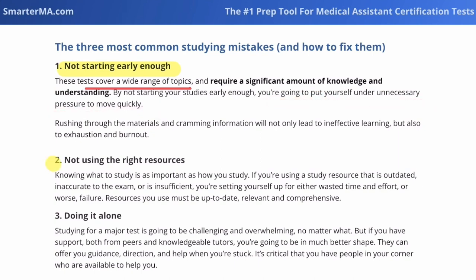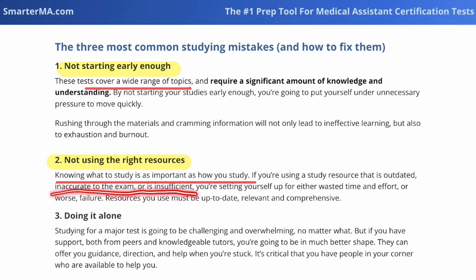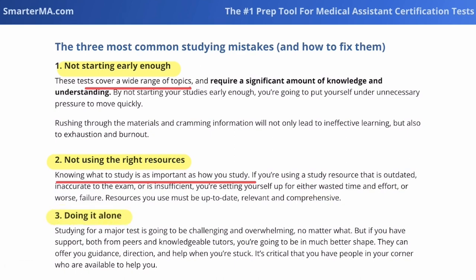The second mistake is not using the right resources to study. Knowing what to study is just as important as how you study. We want to make sure we're not using a resource that's outdated or inaccurate for the exam we're studying for, because we want to be saving time, not wasting it. The final mistake is people trying to do it alone. This is such a big test and it's going to be challenging and overwhelming, but if you have support, you're going to be in much better shape.